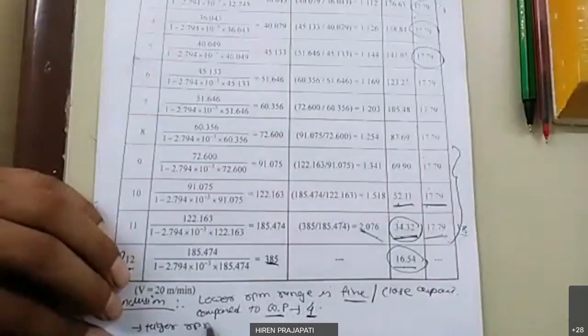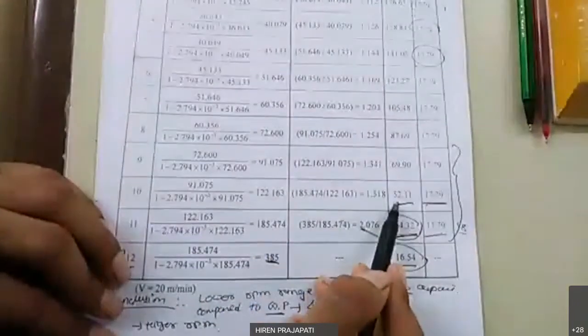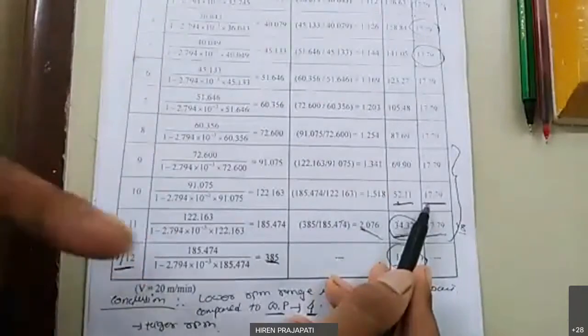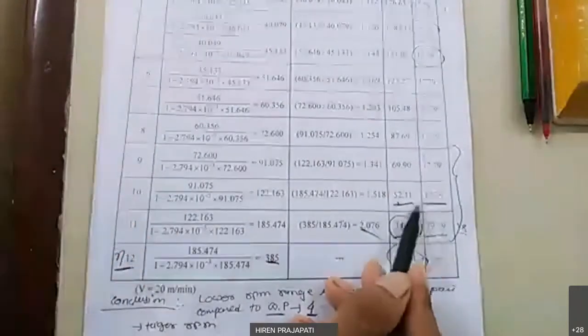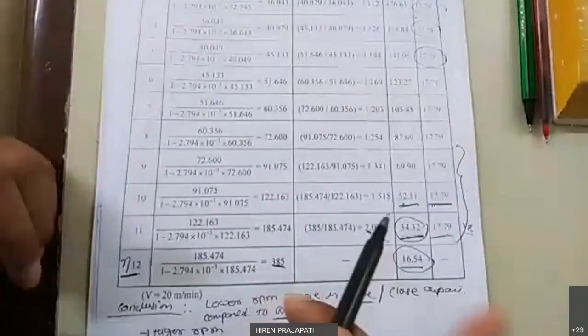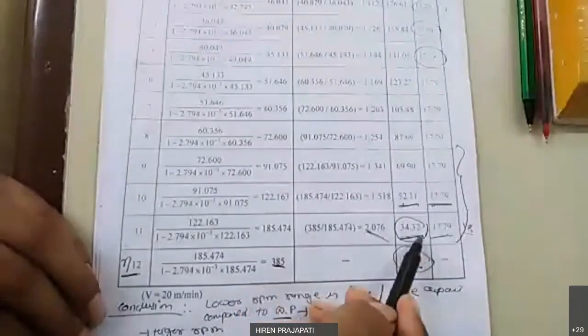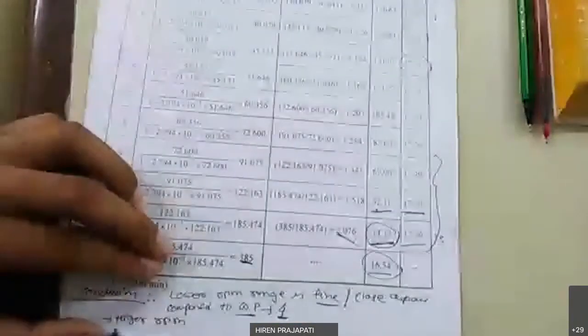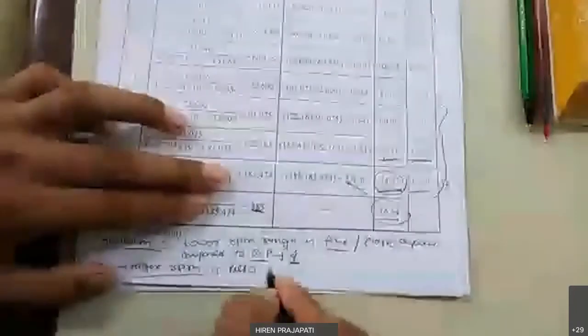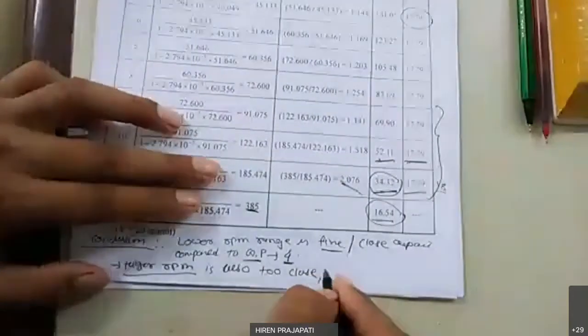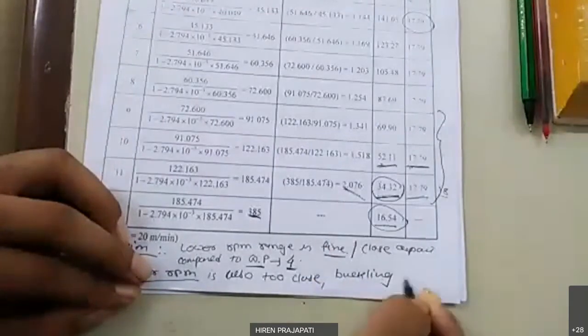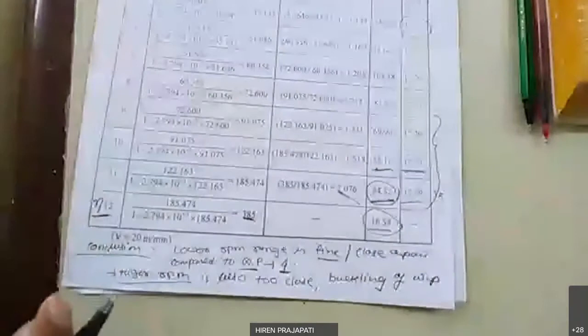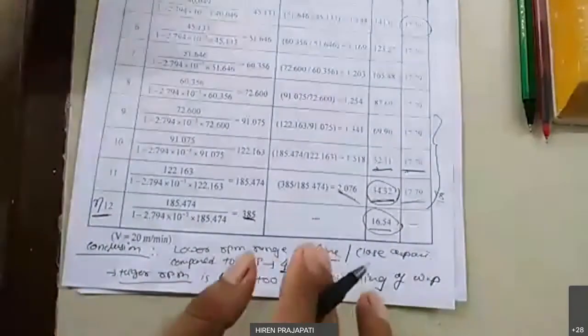In the higher RPM range, if the workpiece diameter is, say, 52 mm and you need to remove 18 mm, then reducing from 52 mm to 34 mm or from 34 mm to 16.54 mm with such large depth of cut relative to the small workpiece diameter causes a problem of buckling, especially if the length of the job is large. So harmonic progression series causes buckling of slender workpieces in the higher RPM range.